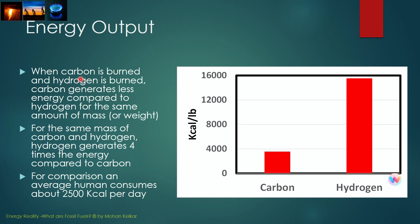The difference is even more magnified when we consider what happens when carbon and hydrogen are burned. Typically, carbon generates much less energy compared to hydrogen for the same amount of mass. In fact, hydrogen generates almost four times as much energy for every pound burned compared to carbon. One pound of carbon roughly creates about 3,600 kilocalories, whereas one pound of hydrogen generates about 15,500 kilocalories. Just for comparison, an average human consumes about 2,500 kilocalories per day.